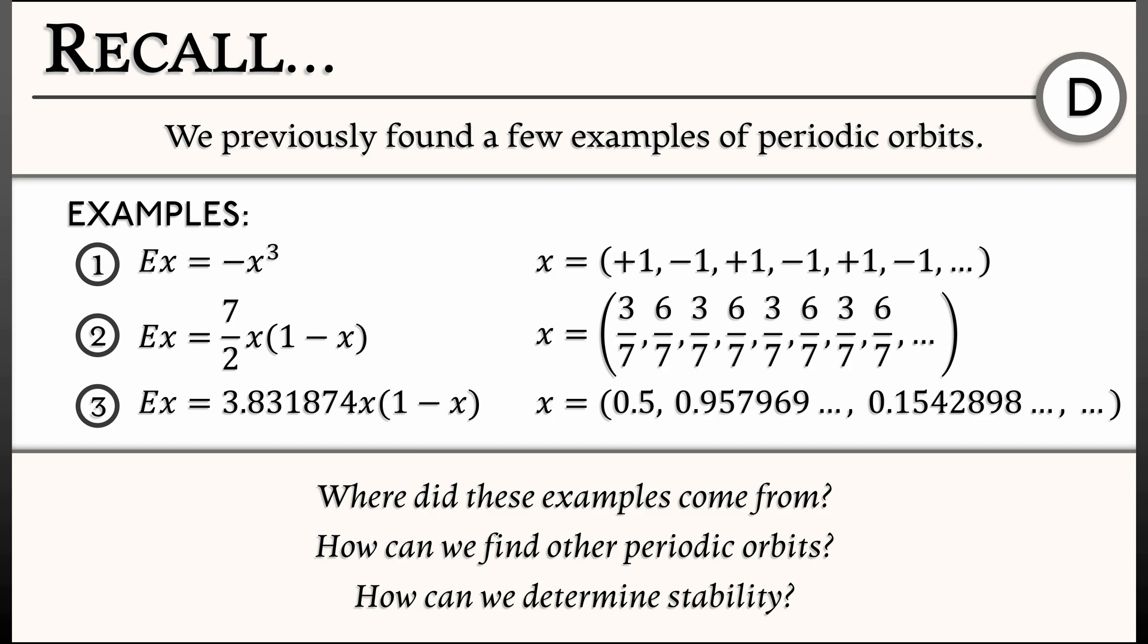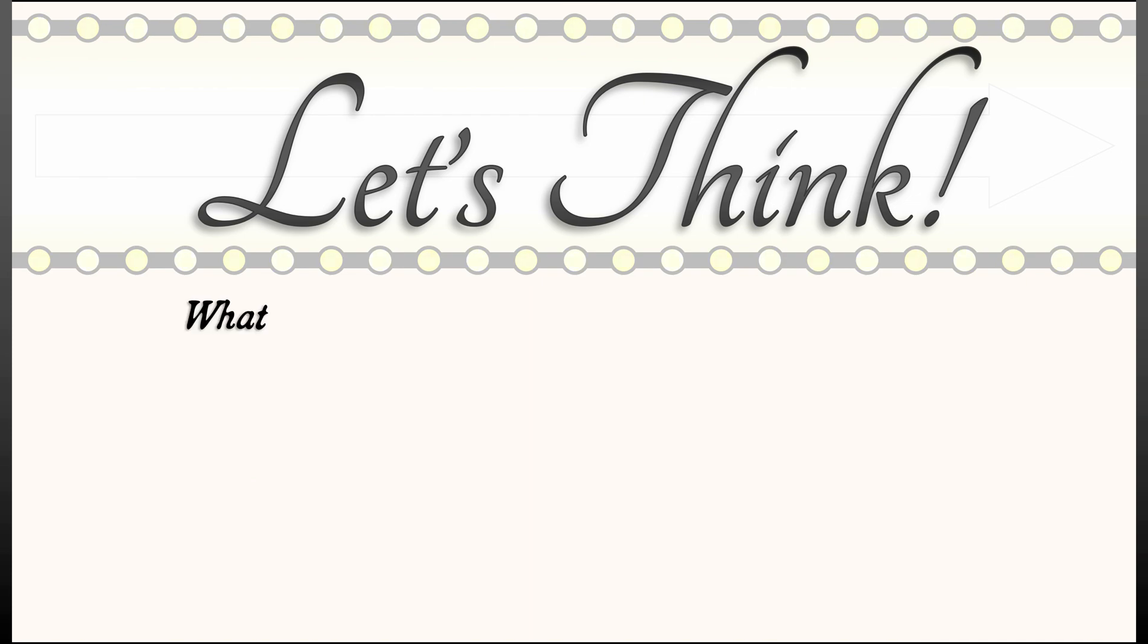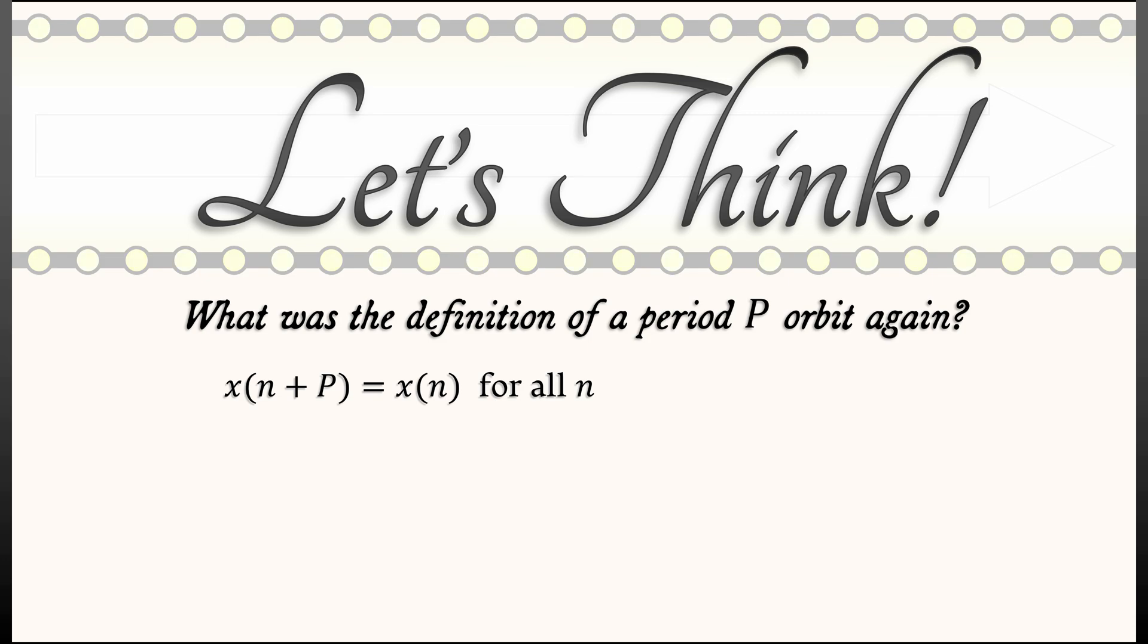Well, let's think. What's the definition of a period P orbit in a discrete time-dynamical system? Well, what that means is that you have some solution x of n, so that x of n plus P equals x of n for all values of n. That's it. That's the definition.